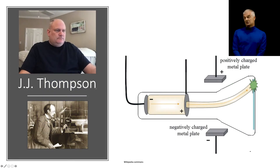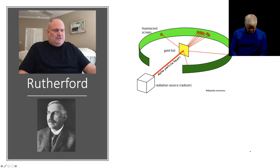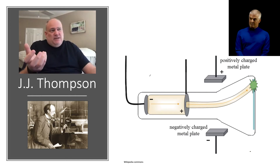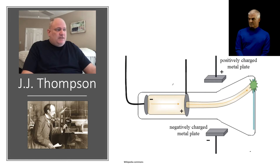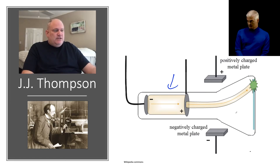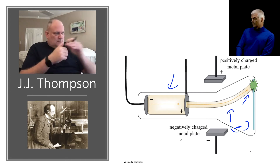Dalton saw atoms as spheres, and then a more advanced version came from J.J. Thomson. The atom's view evolves over time — Thomson wondered if it really was a solid sphere. He came up with an ingenious experiment using a cathode ray tube. He took a piece of metal, put it in the tube, and noticed something shot out. When he changed the charge on the outside of the tube, it caused that beam to shift — a negative plate below pushed the beam upward.